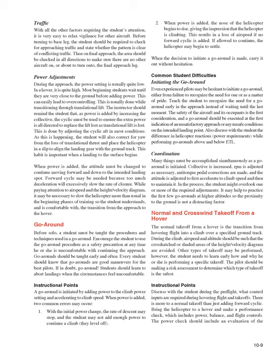A go-around is initiated by adding power to the climb power setting and accelerating to climb speed. When power is added, two common errors may occur: (1) with the initial power change, the rate of descent may stop and the student may not add enough power to continue a climb — they level off; (2) when power is added, the nose of the helicopter begins to rise, giving the impression that the helicopter is climbing, resulting in a loss of airspeed if no forward cyclic is added. If allowed to continue, the helicopter may begin to settle. When the decision to initiate a go-around is made, carry it out without hesitation.